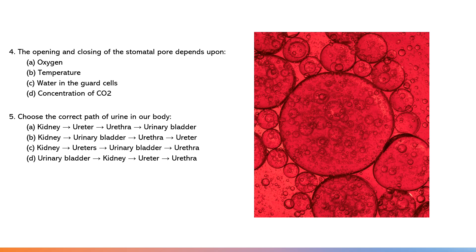Moving on to the human body, let's trace the path of urine. Can you recall the correct sequence from the kidney to the urinary bladder and beyond? Yes, the correct answer is option C, where urine travels from the kidney to the ureter, then the urinary bladder, and finally the urethra.